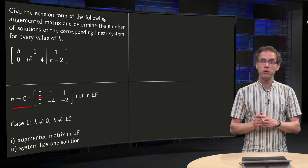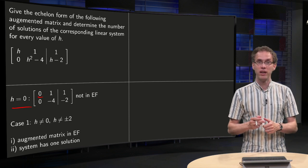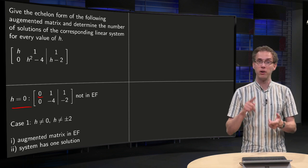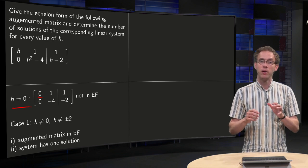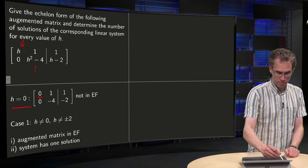Now let's first do the easy cases where a pivot is not disappearing, so in case h is not equal to zero, h is not equal to plus or minus two, because in those cases we just have pivots over here.